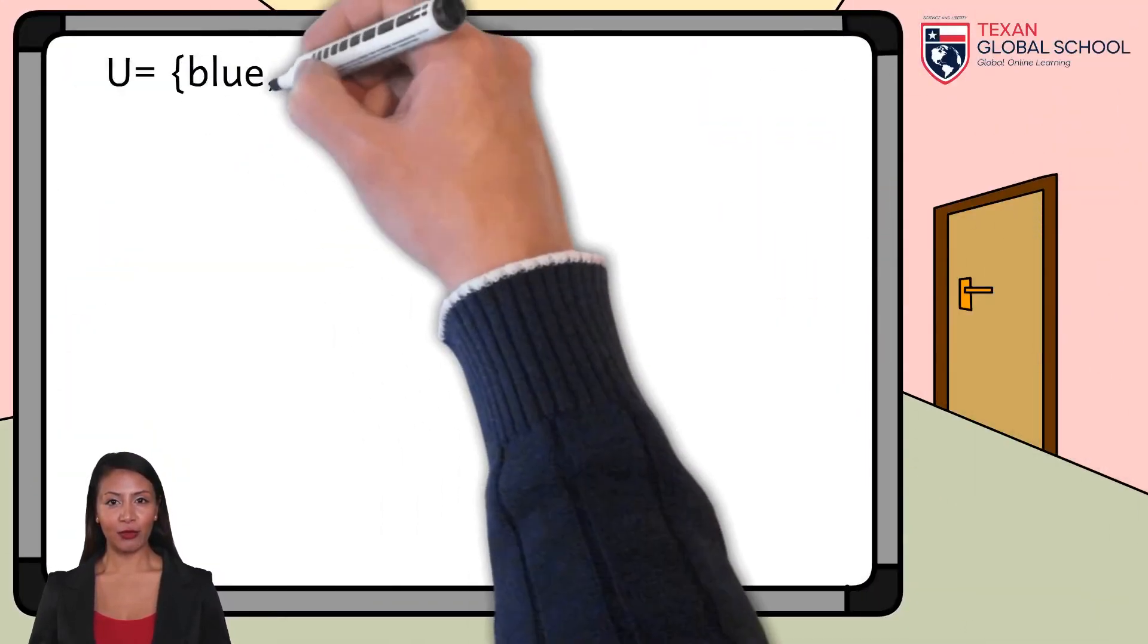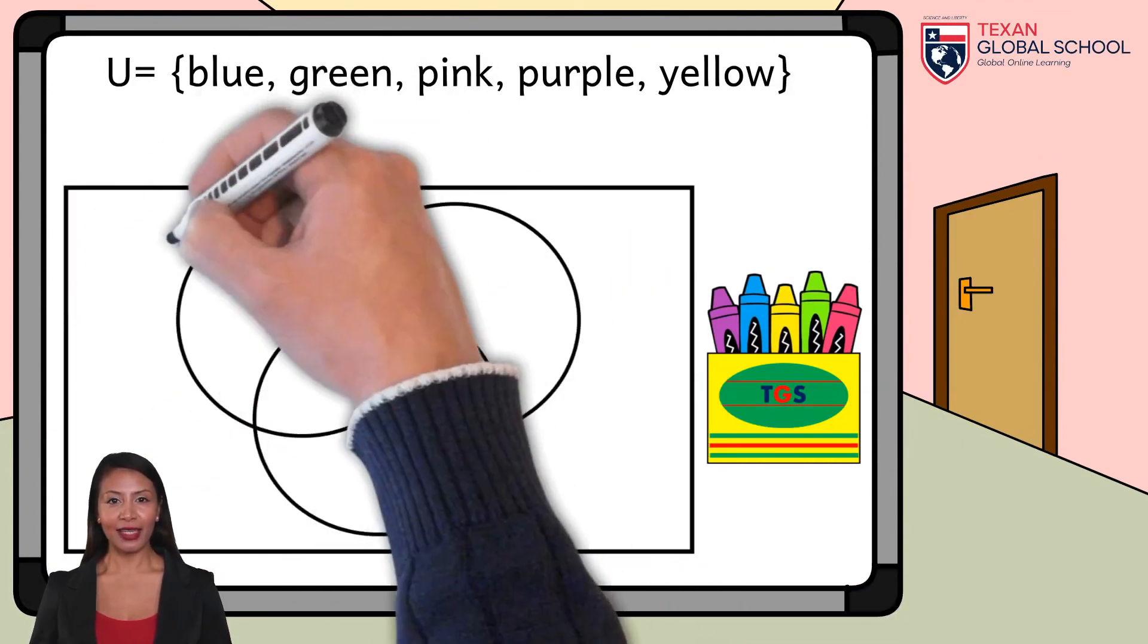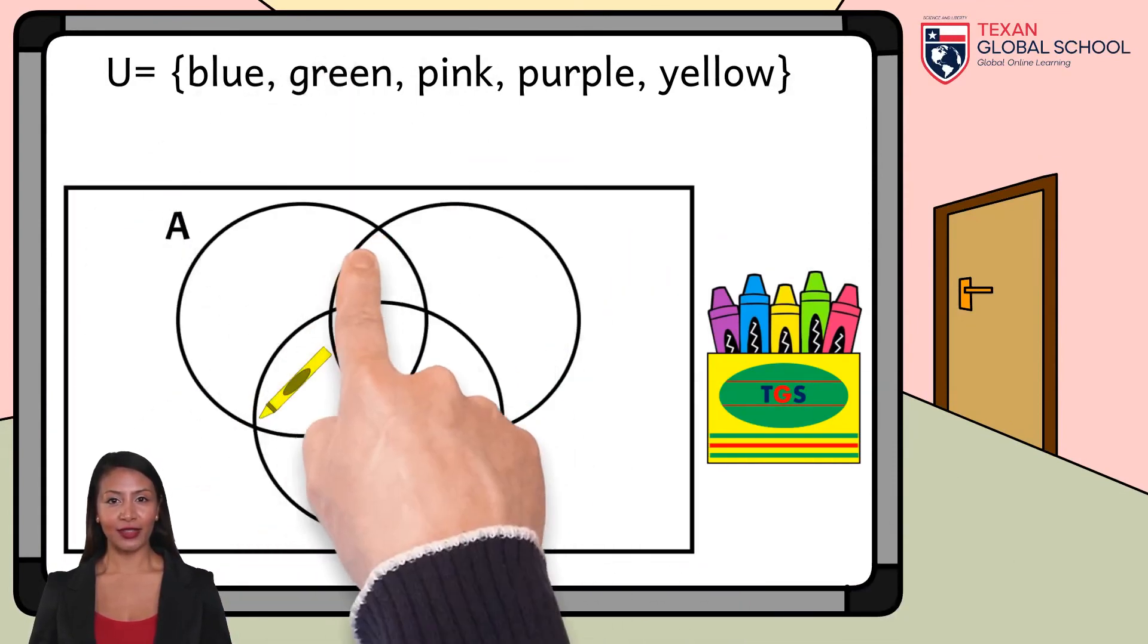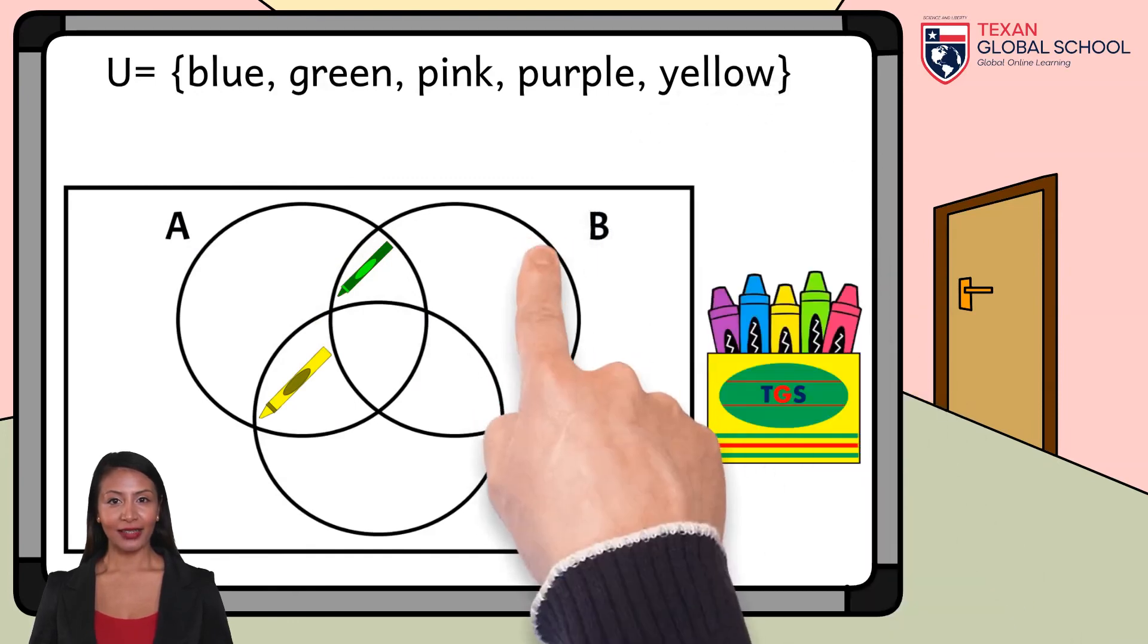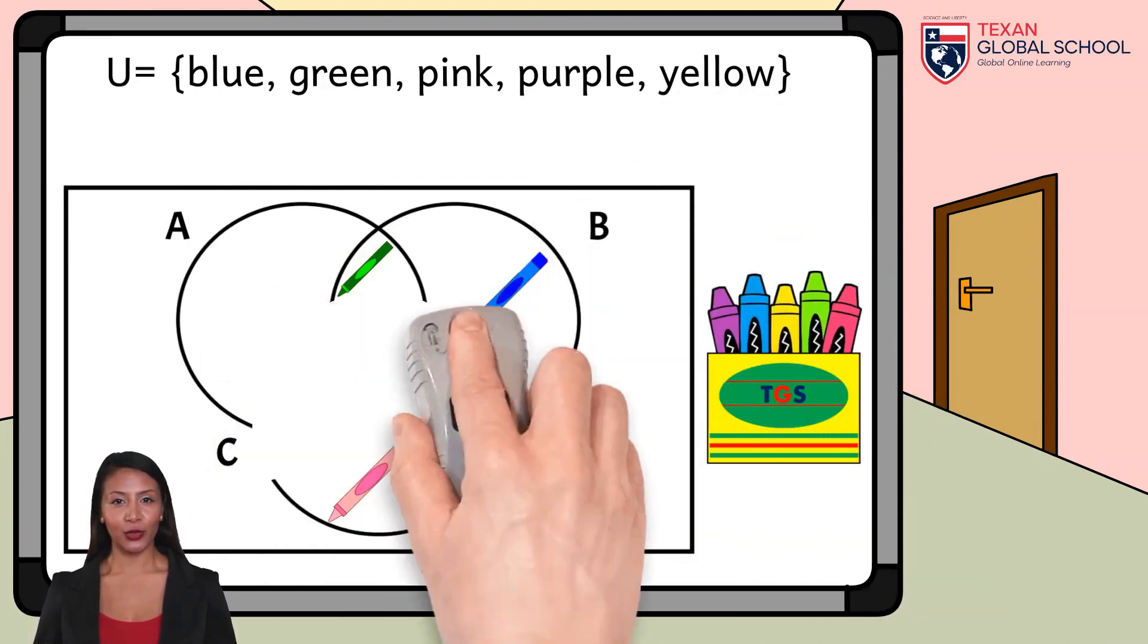Finally, the complement of Set C is obtained by comparing its elements with the universal set represented with Set Notation, or simply covering Set C to determine those missing elements to complete the universal set. In this way, we can see that the complement of C is made up of blue and green crayons.